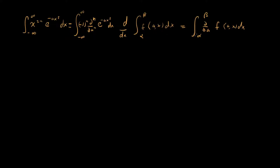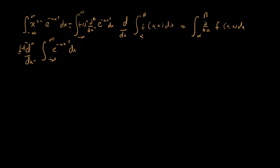This is where the Leibniz integral rule becomes relevant. We can pull the derivative outside the integral, leaving us with d to the n over da to the n, times minus one to the n, times the integral from minus infinity to infinity of e to the minus ax squared dx. This inner integral is just the standard Gaussian centered at the origin, which we already know equals the square root of pi over a.